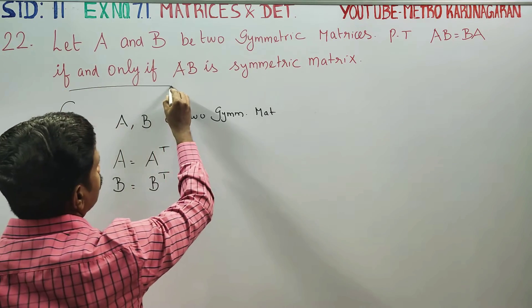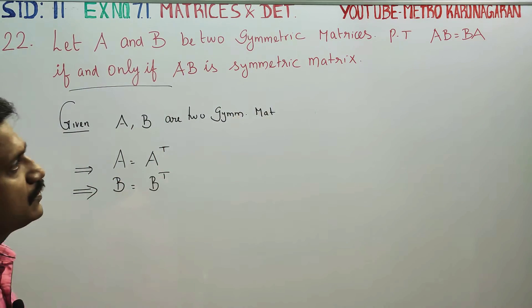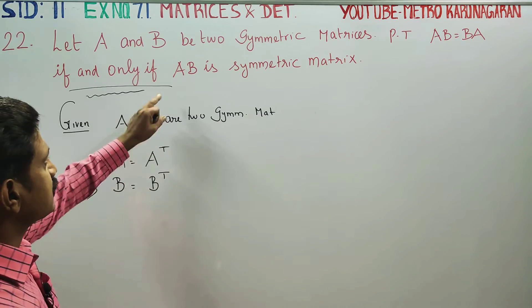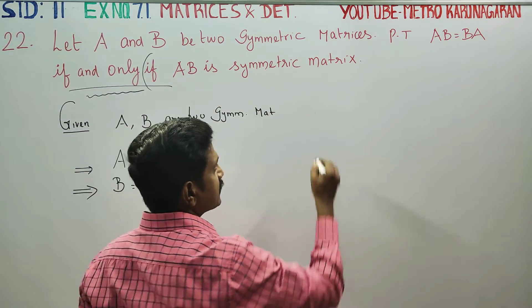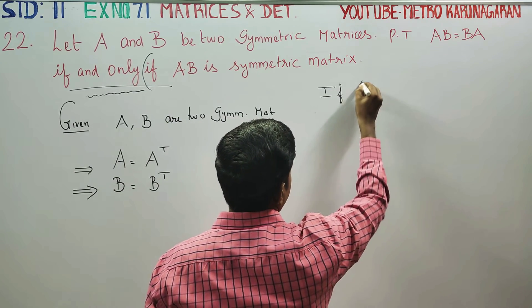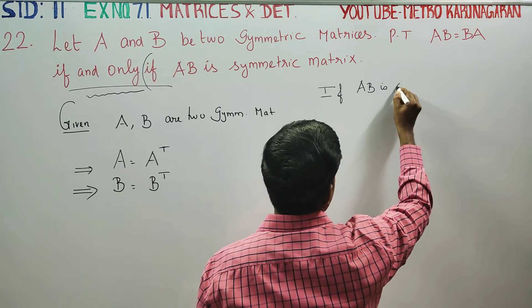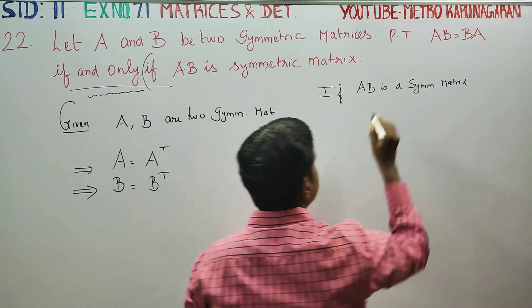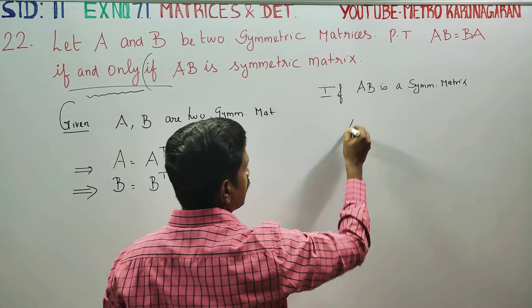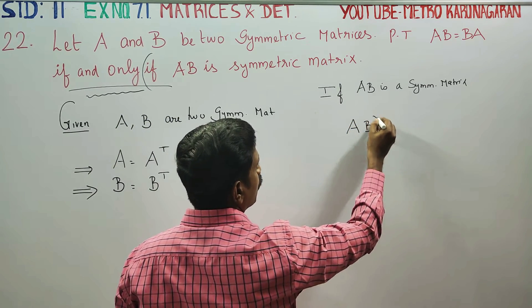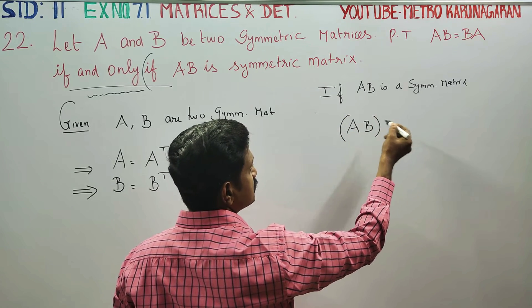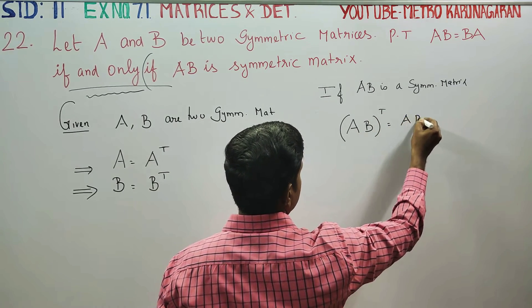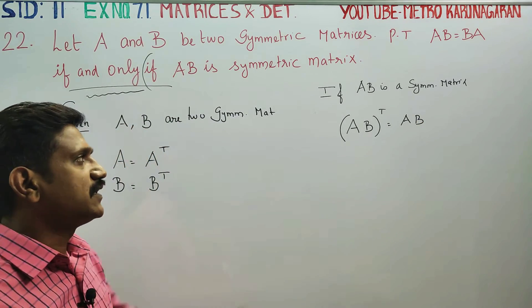If and only if AB is a symmetric matrix, you have to prove that AB is equal to BA. In the second stage, if AB is a symmetric matrix, then AB transpose is equal to AB. This is the only-if condition.